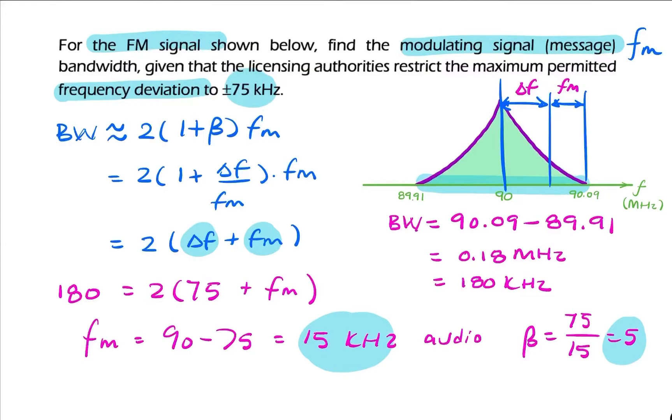So 75, that's set by the licensing authorities, and that's very common. Some countries use 50, most countries use 75. Beta is very common for wideband FM. And 15 kilohertz is very common for audio broadcasts. So there you have your final answer.